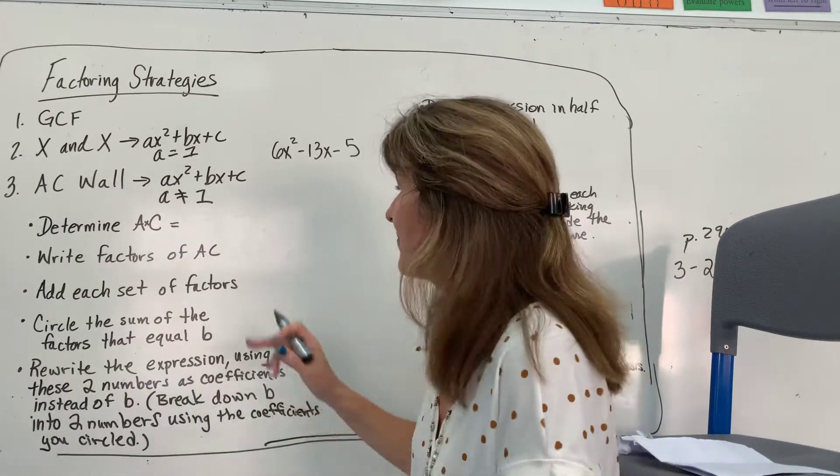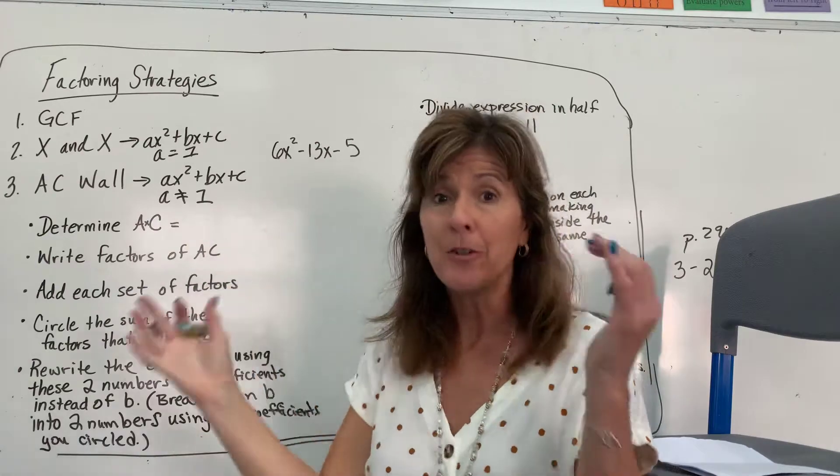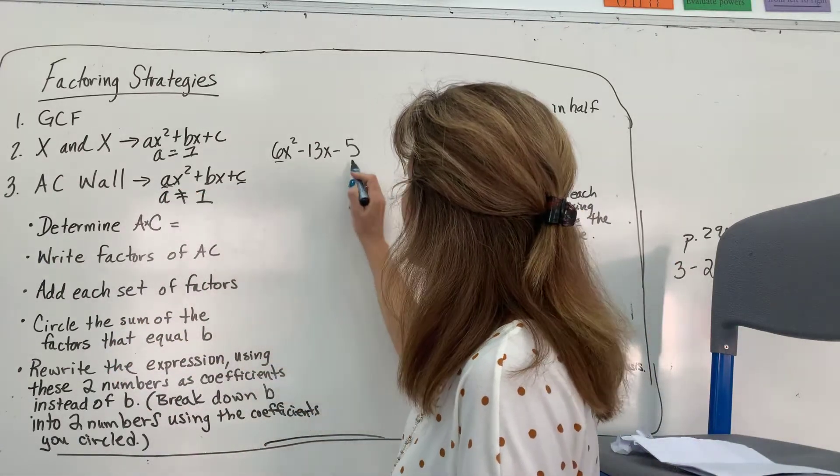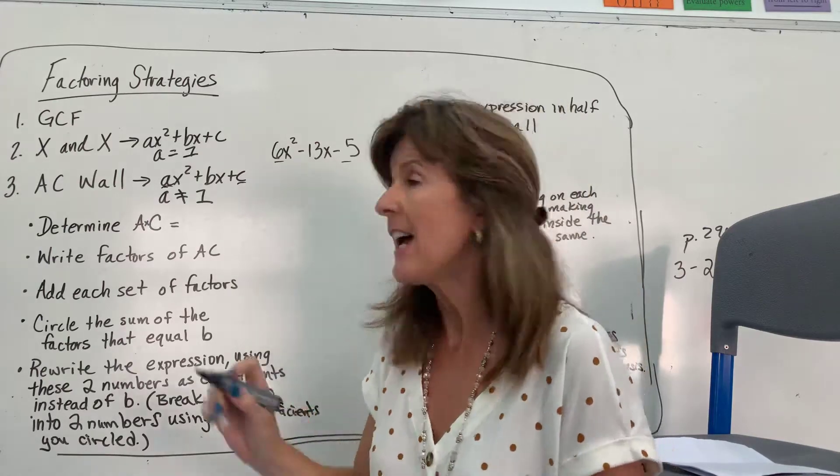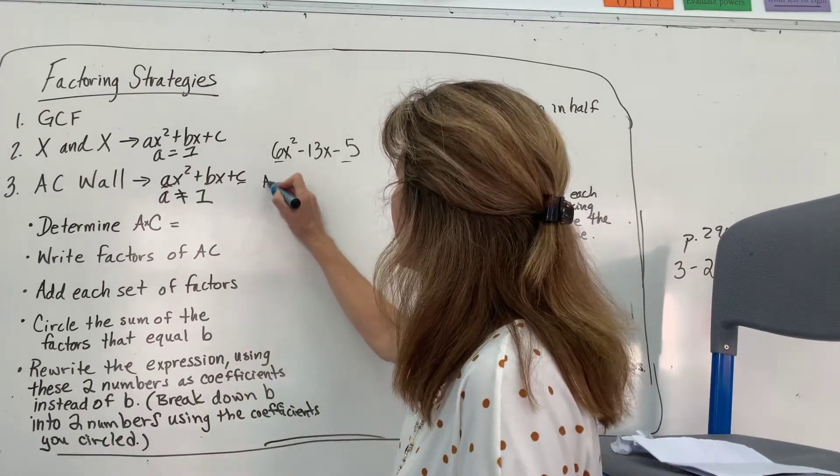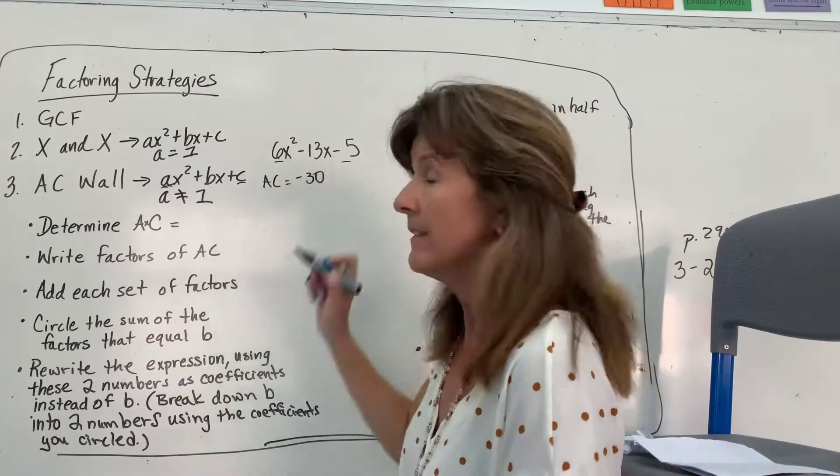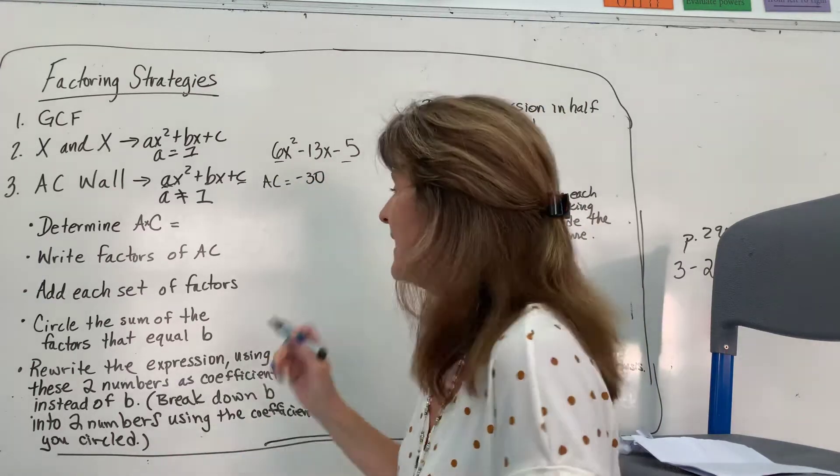So, this is how we're going to do it. We're going to determine AC. The first part of AC Wall is AC. A, remember, and C. A is 6. C is negative 5. What is AC? AC equals 6 times negative 5, which is negative 30. Easy now, right?